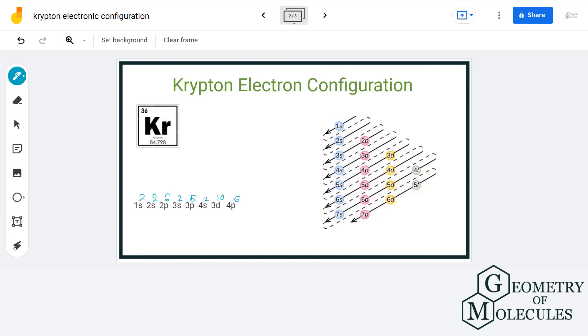We can see here that all the orbitals are fully occupied in Krypton. That's because it is a Group 18 element and has its octet full. So this is the final electronic configuration of Krypton.